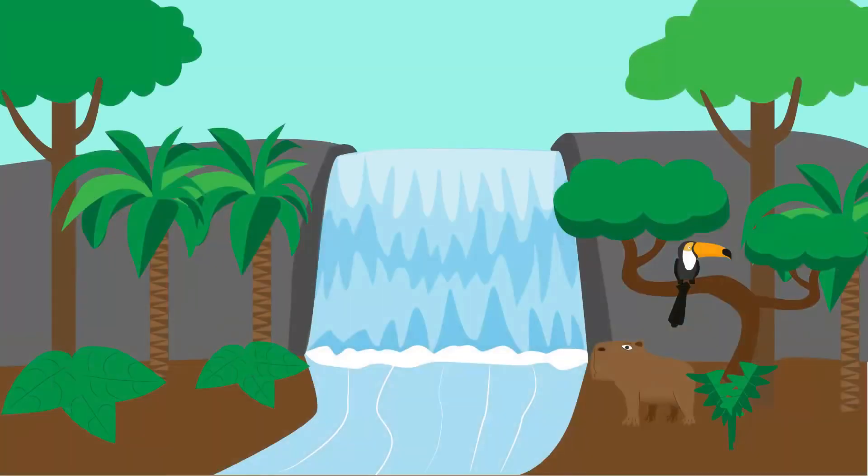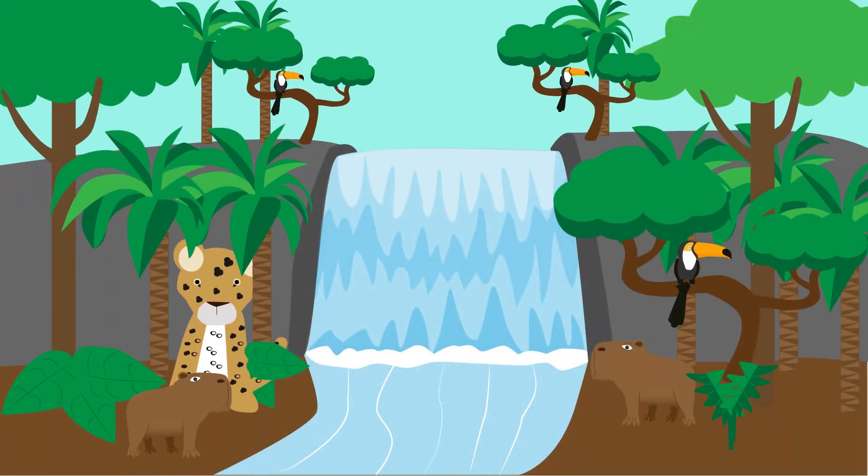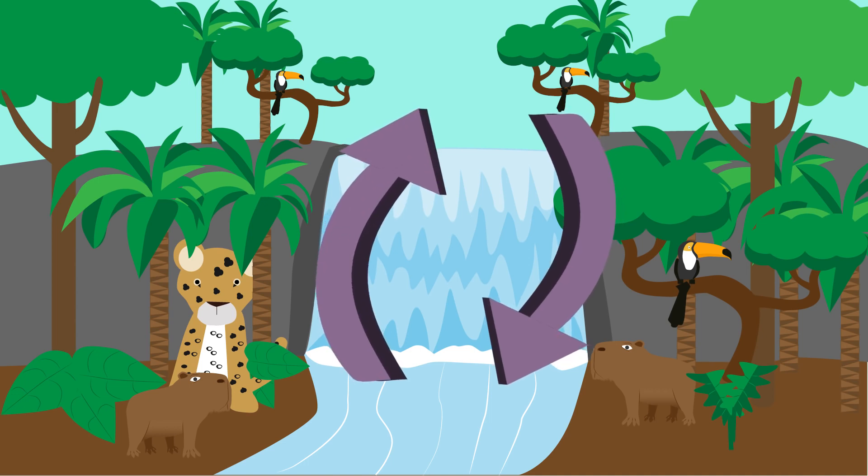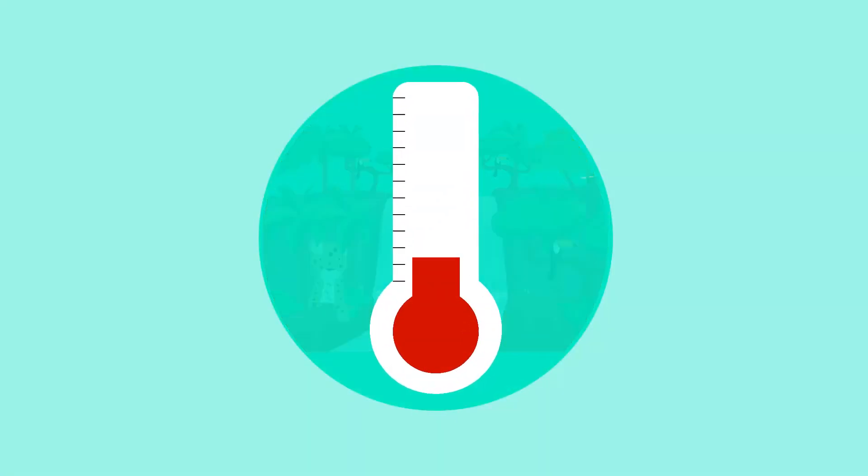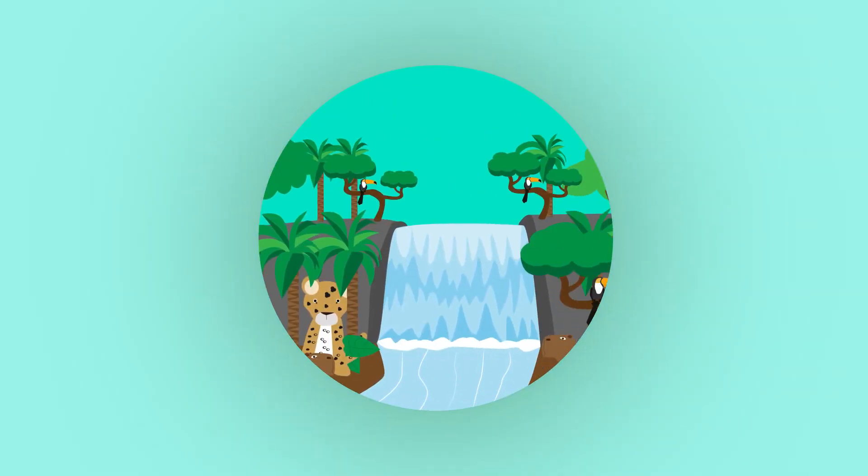By increasing the local biodiversity, we can help the environment to sustain itself and give it a better chance of withstanding the effect of global climate change. A healthy and diverse ecosystem can withstand and recover from disasters.